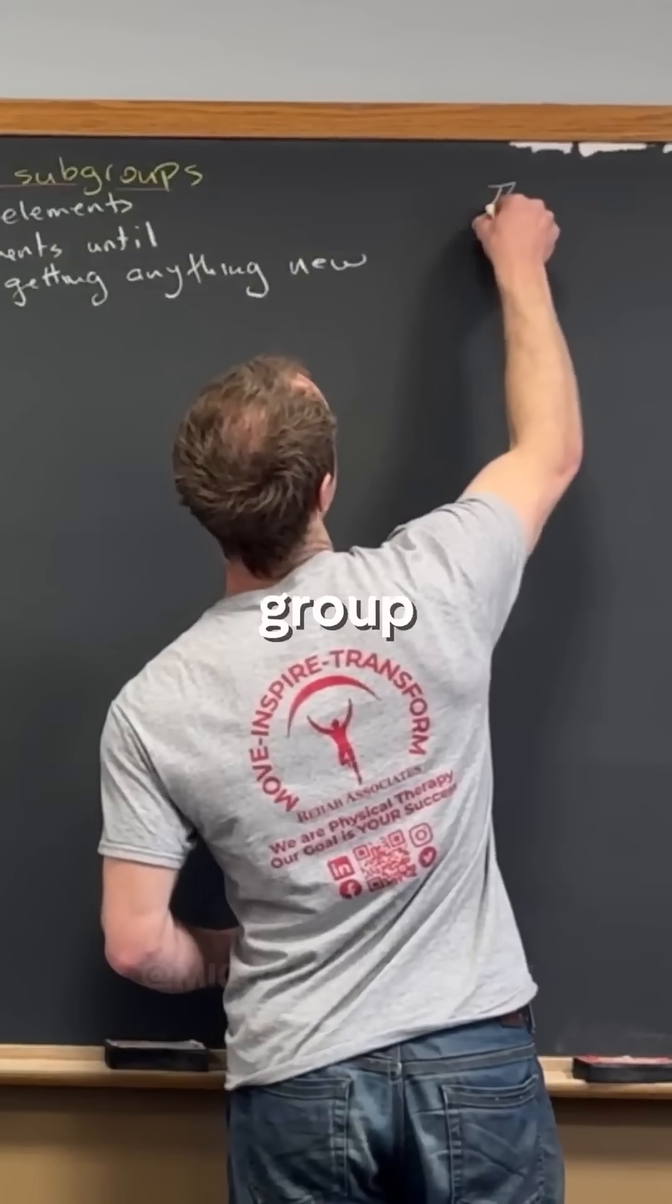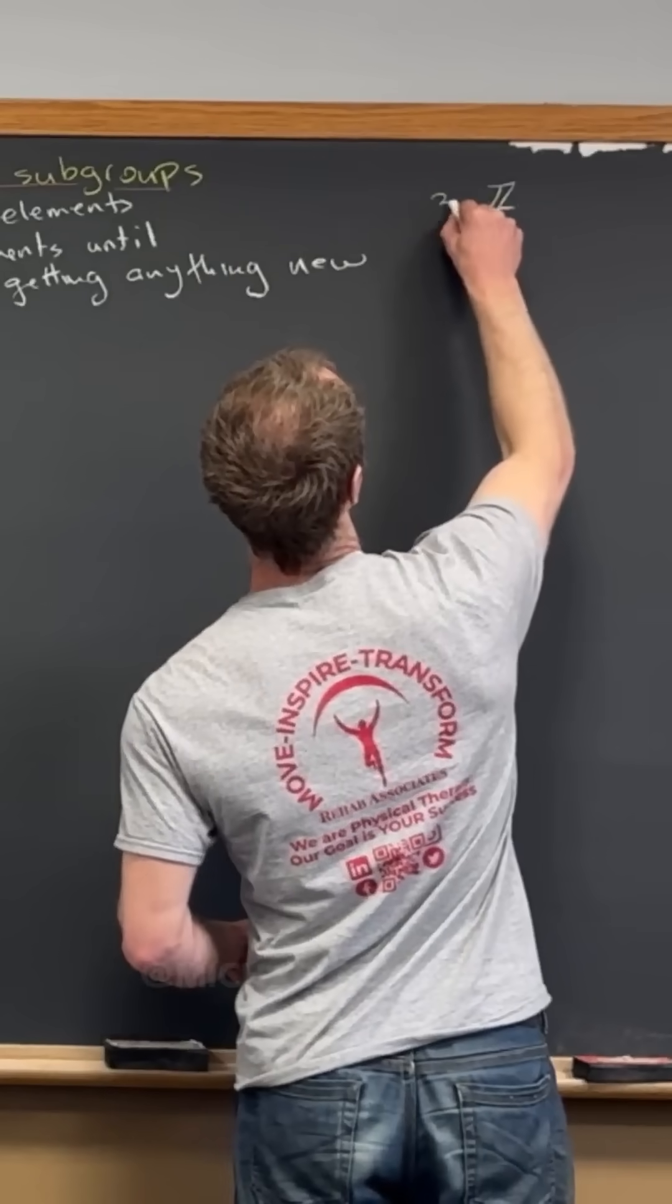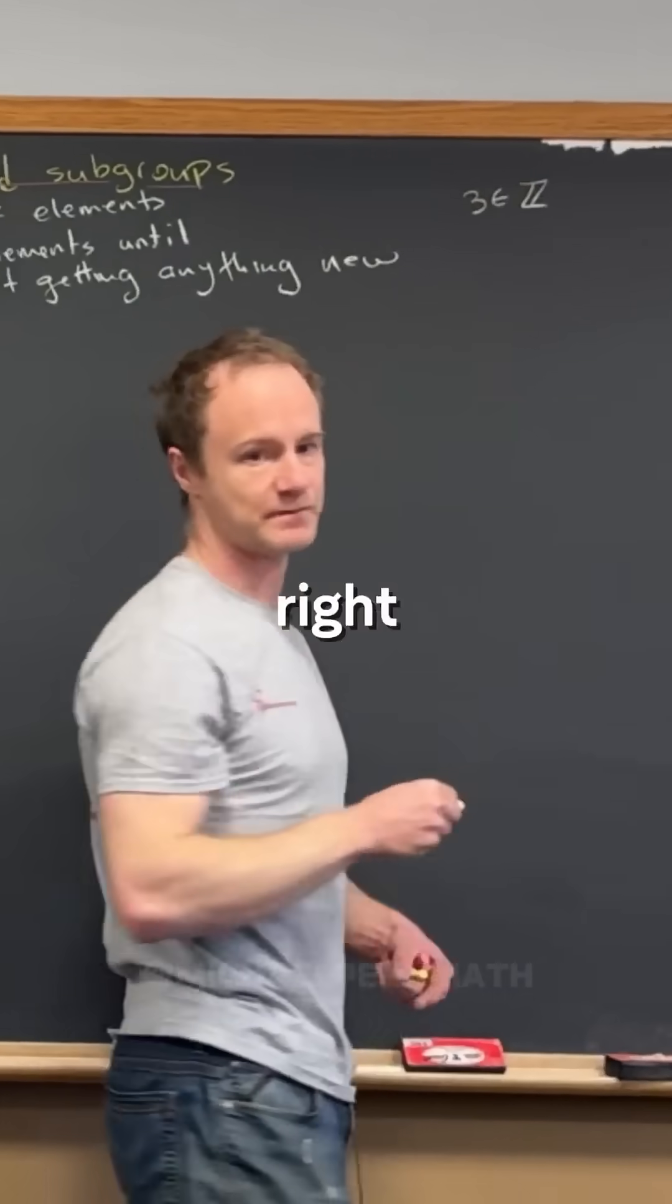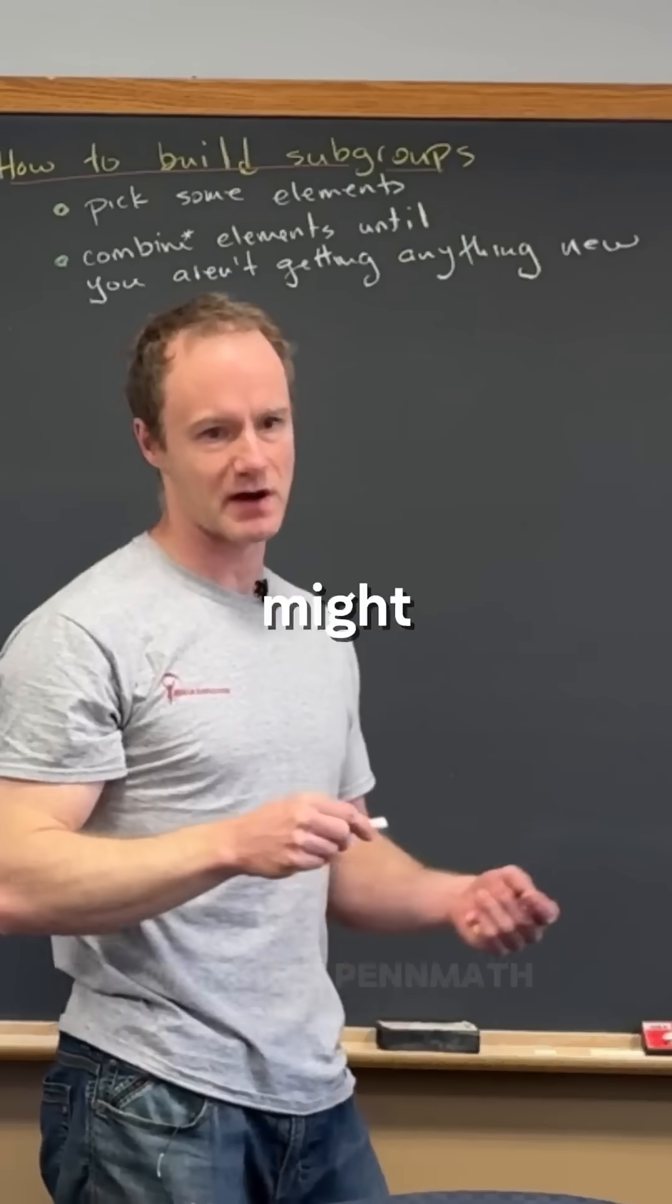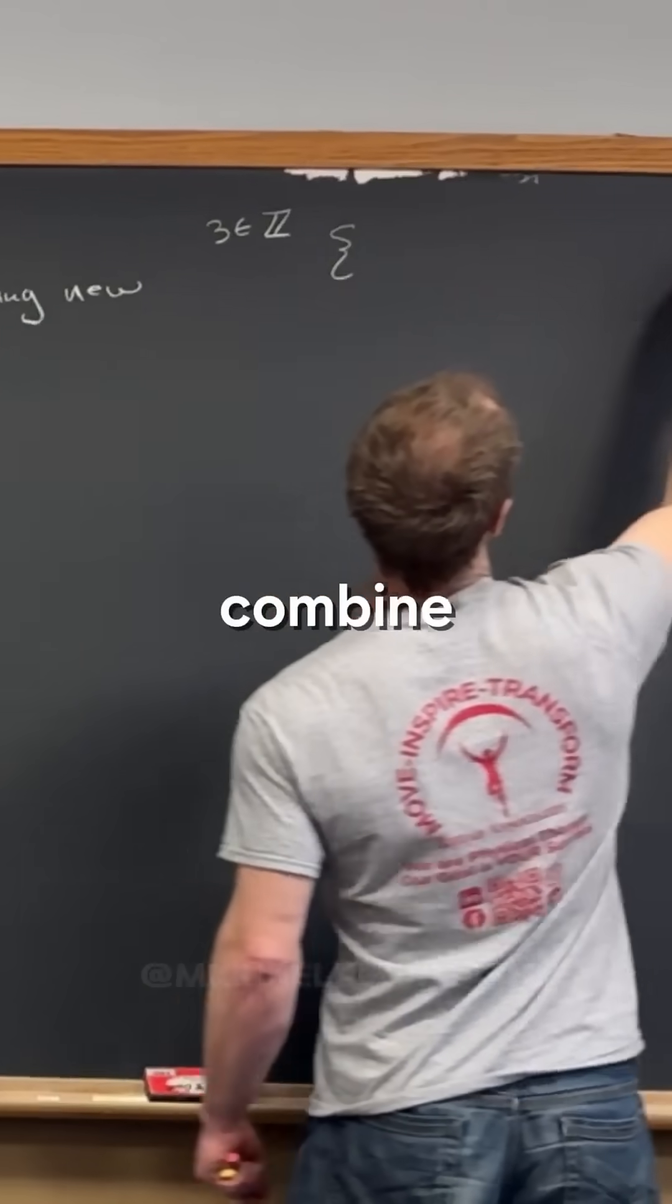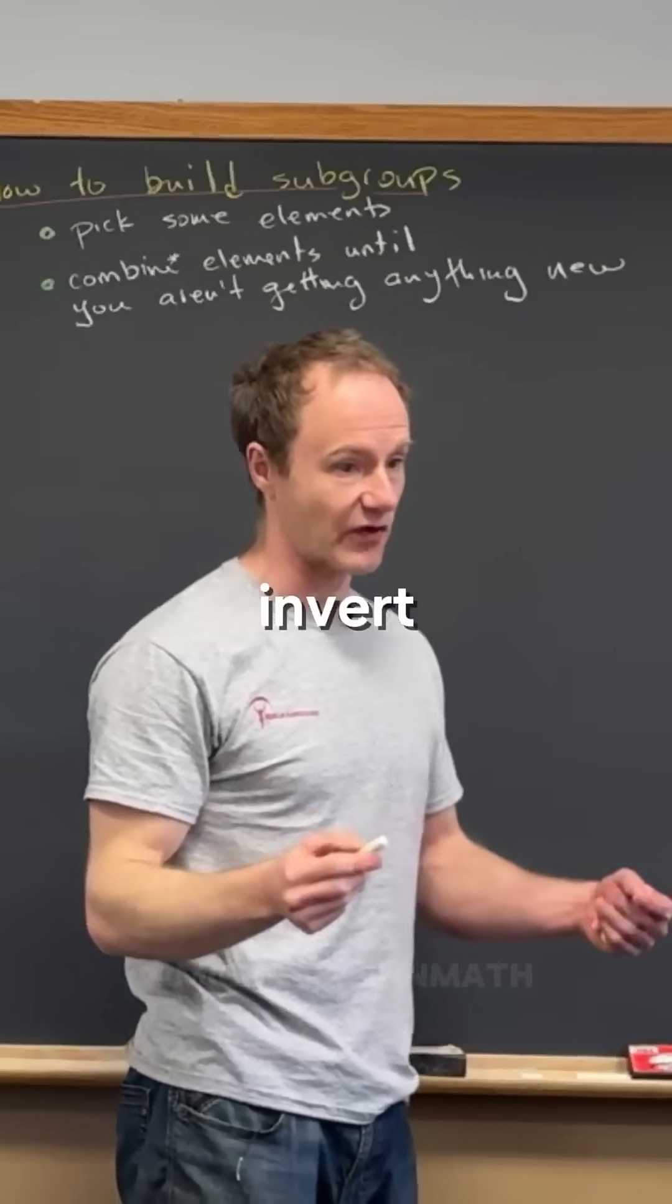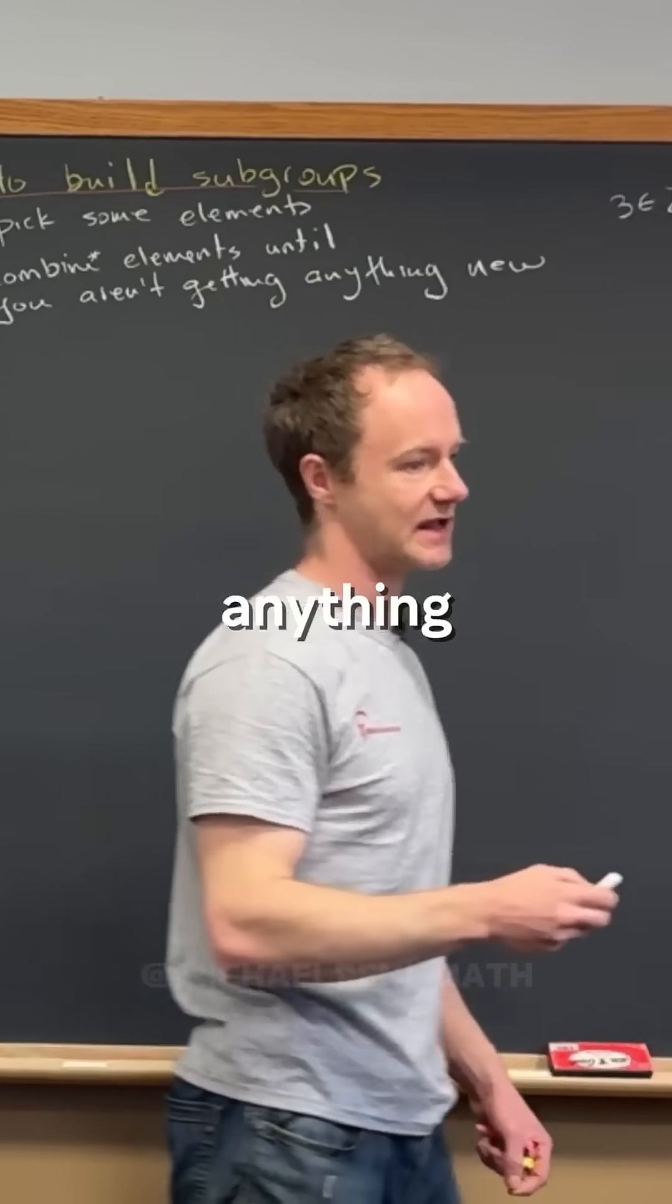So if I say, let's say my group is Z. And let's say my element is three. That's the only element I'm picking. Now I'm going to combine three with itself and invert it until I stop getting anything new.